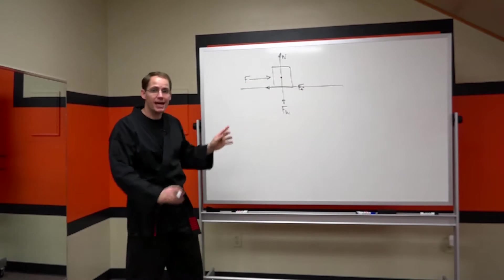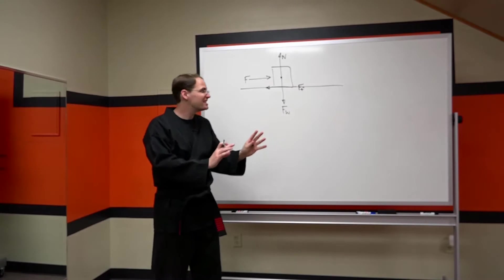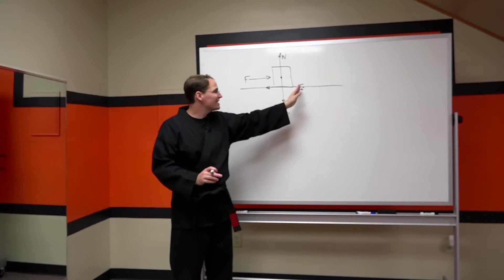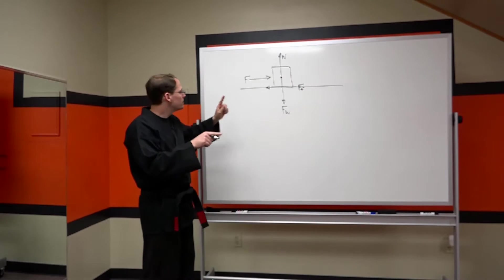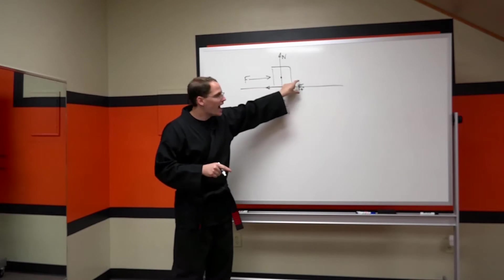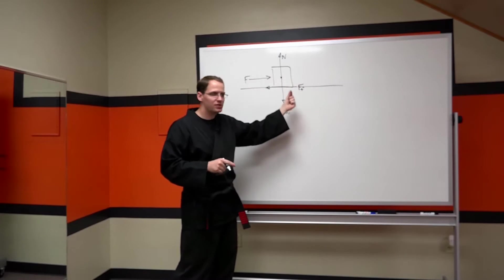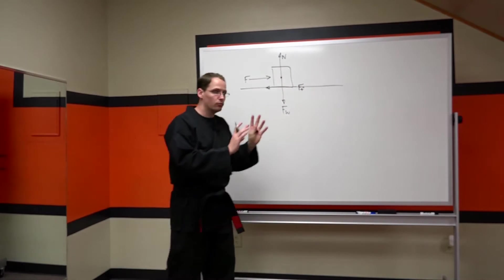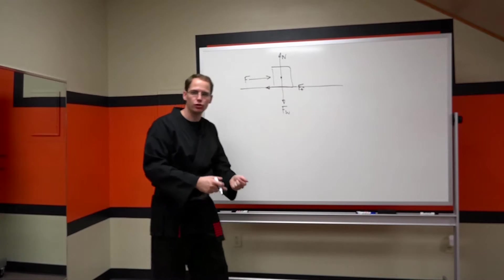So I continue to play this game. I push a little harder on the box, it still doesn't move. What happens? This frictional force increases, and we continue to play this game until eventually I reach the maximum static friction force. That threshold along which when I break that threshold, now the box is in motion.